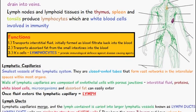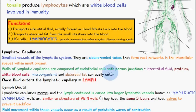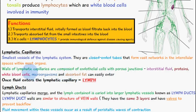Now let's talk about the vessels. We have lymphatic capillaries first, which are the smallest vessels of the lymphatic system and they are closed-ended tubes that form vast networks in the intercellular spaces within most organs. The walls of lymphatic capillaries are composed of endothelial cells with porous junctions, which means they have small gaps inside, and interstitial fluid, proteins, white blood cells, microorganisms, and absorbed fat can easily enter into these lymphatic capillaries. Once fluid enters the lymphatic capillary, it's now known as lymph.